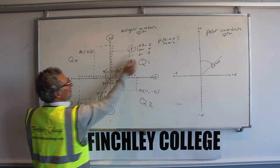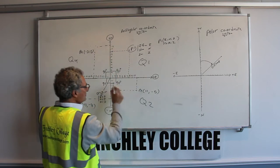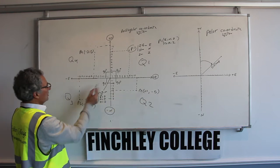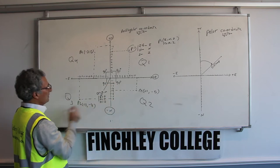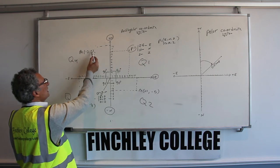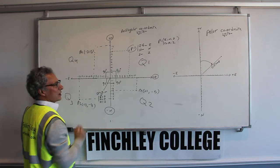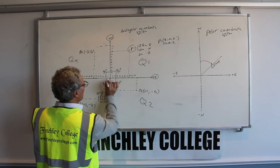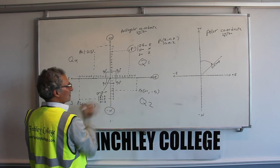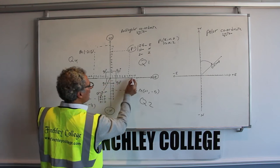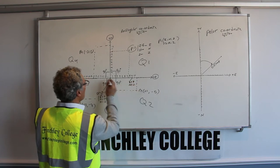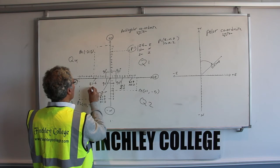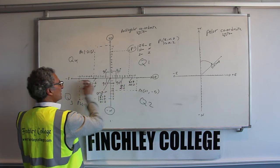We divide the plane into 4 quadrants. In quadrant 1, easting is plus and northing is plus. In quadrant 2, easting is plus and northing is minus. In quadrant 3, easting is minus and northing is minus. In quadrant 4, easting is minus and northing is plus. If a point happens to be on the east axis, its northing will be zero — for example, easting 9 northing 0, or easting minus 6 northing 0.